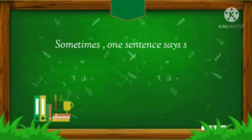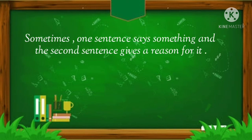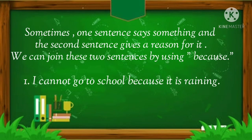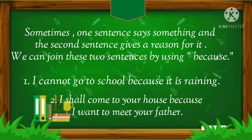Sometimes one sentence says something and the second sentence gives a reason for it. We can join these two sentences by using 'because'. For example: I cannot go to school because it is raining. I shall come to your house because I want to meet your father.